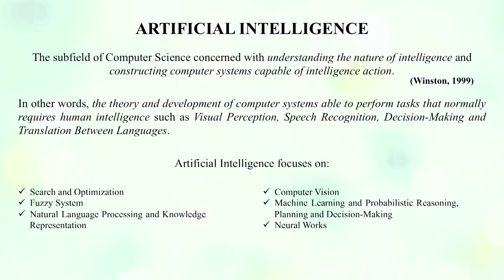Dear learners, artificial intelligence is a subfield of computer science concerned with understanding the nature of intelligence and constructing computer systems capable of human intelligence. In other words, it is the theory and development of computer systems able to perform tasks that normally require human intelligence, such as visual perception, speech recognition, decision making, and translation between languages.